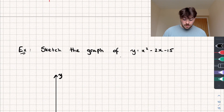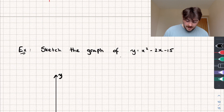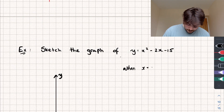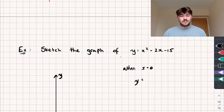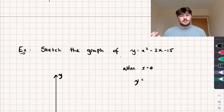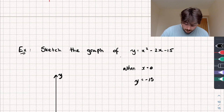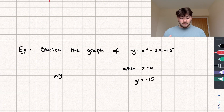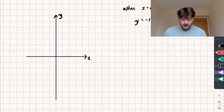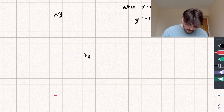Substituting x equals zero into our quadratic: y equals 0 squared minus 2 times 0 minus 15, which gives us y equals negative 15. So our quadratic graph is going to pass through the y-axis at y equals negative 15.